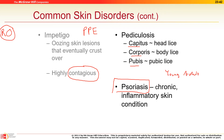Psoriasis is usually seen in teens and young adults. Similar to eczema, it's an autoimmune condition where the immune system attacks healthy skin cells for no apparent reason. Stress and certain foods can trigger it. Treatment involves suppressing the body's immune system.